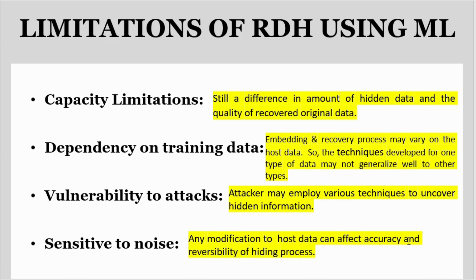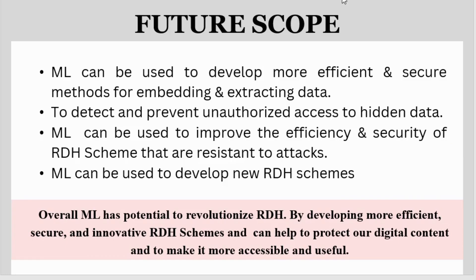For future scope, machine learning can be used to develop more efficient and secure methods for embedding and extraction of data, to detect and prevent unauthorized access to hidden data, and to improve the efficiency and security of reversible data hiding schemes that are resistant to attacks. Machine learning has the potential to revolutionize reversible data hiding by developing more efficient, secure, and innovative schemes that protect our digital content and make it more accessible and useful.